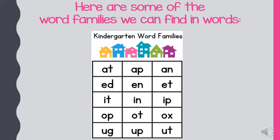Let's move down one row. The short E makes the 'eh' sound. We have 'ed,' 'en,' and 'et.' The next row across has the I — the short I says 'ih' — 'it,' 'in,' and 'ip.' The next row has the O — that 'ah' sound, like octopus. So the word families we have are 'op,' 'ot,' and 'ox.'